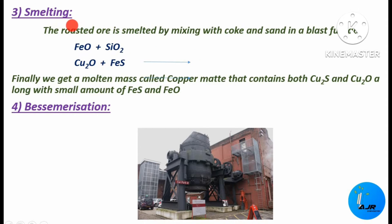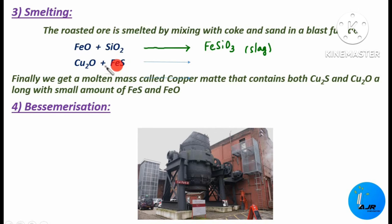The next step is smelting. The roasted ore is melted by mixing with coke and sand in a blast furnace. Ferrous oxide reacts with silica to form FeSiO3 — iron silicate — which is the slag, a waste product. Cuprous oxide then reacts with the unreacted ferrous sulfide, forming Cu2S and FeO. Finally, we get a molten mass called copper matte, which contains Cu2S and Cu2O along with small amounts of FeS and FeO.